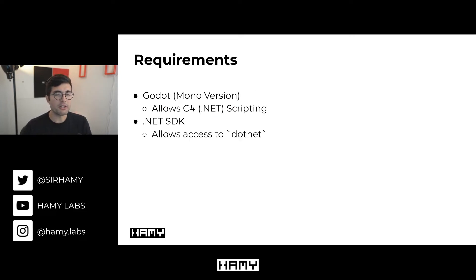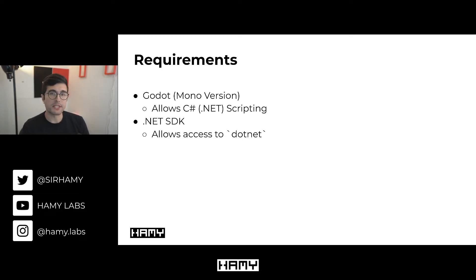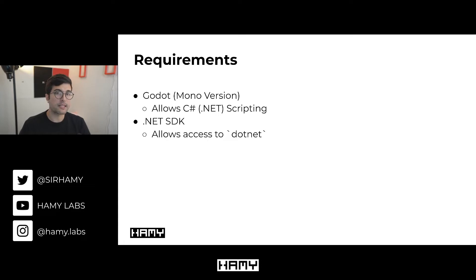So there are a few things that you need if you actually want to follow along with this tutorial. The first is Godot, and we specifically need the Godot mono version. The reason we need this is because it's going to allow us to build and run C-sharp, and implicitly this is going to give us access to .NET, which we'll need for F-sharp.